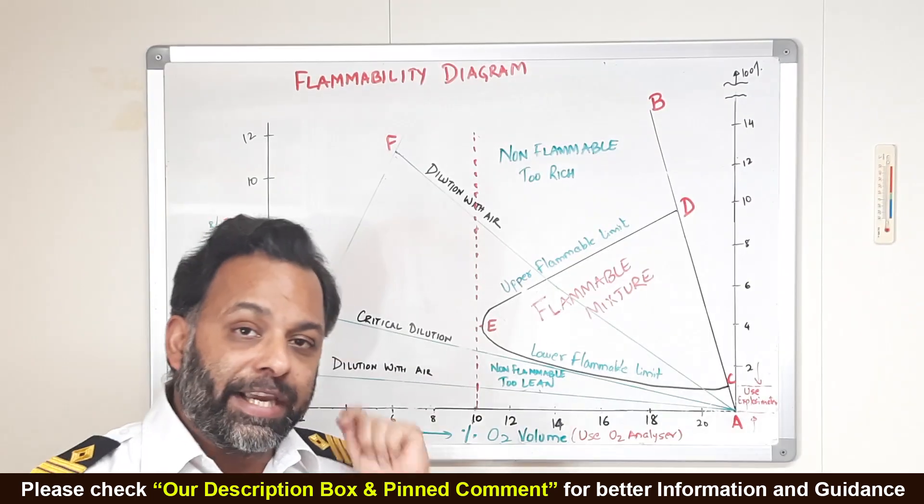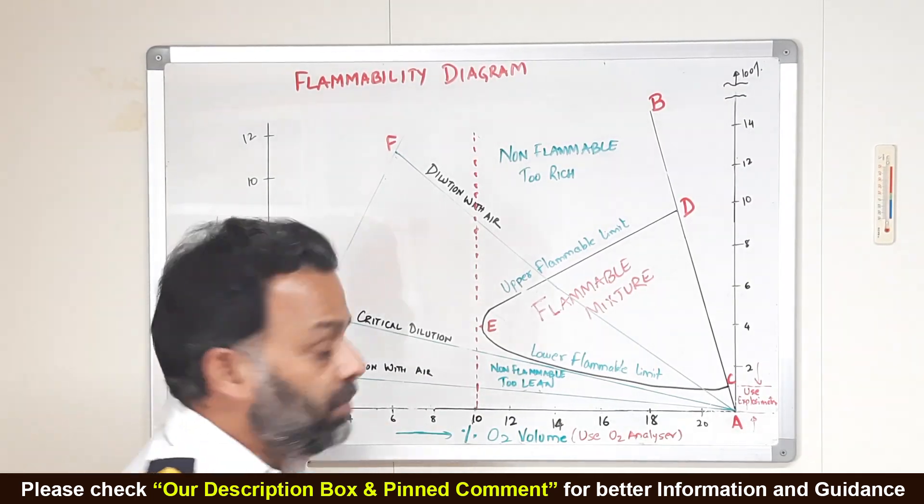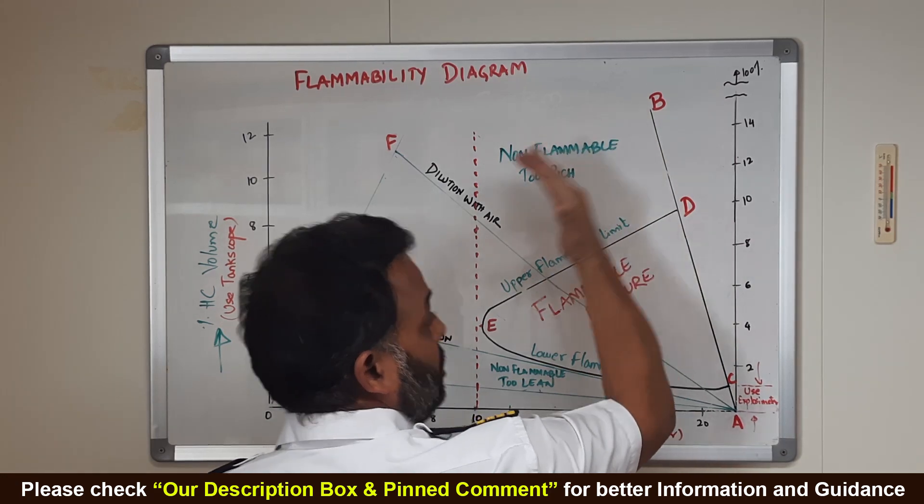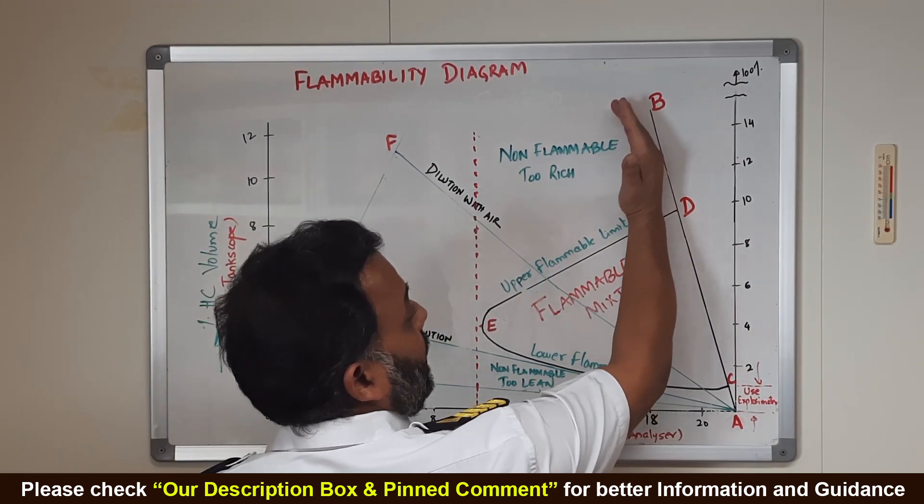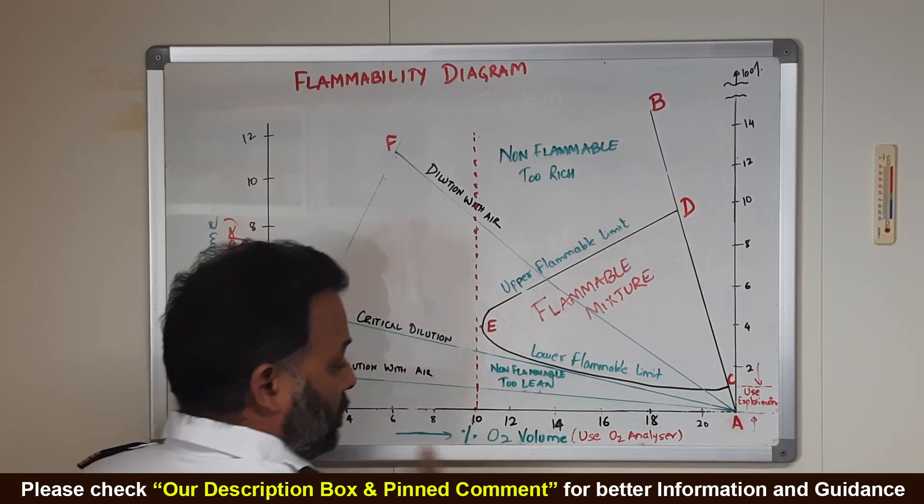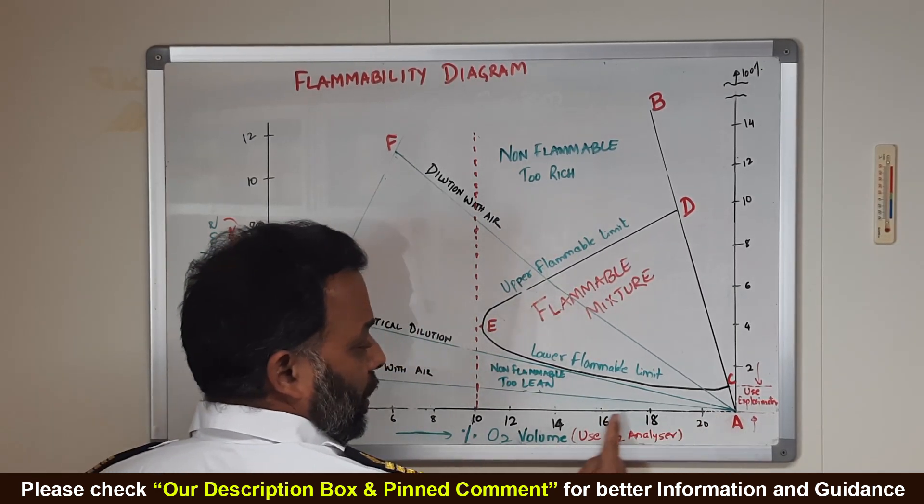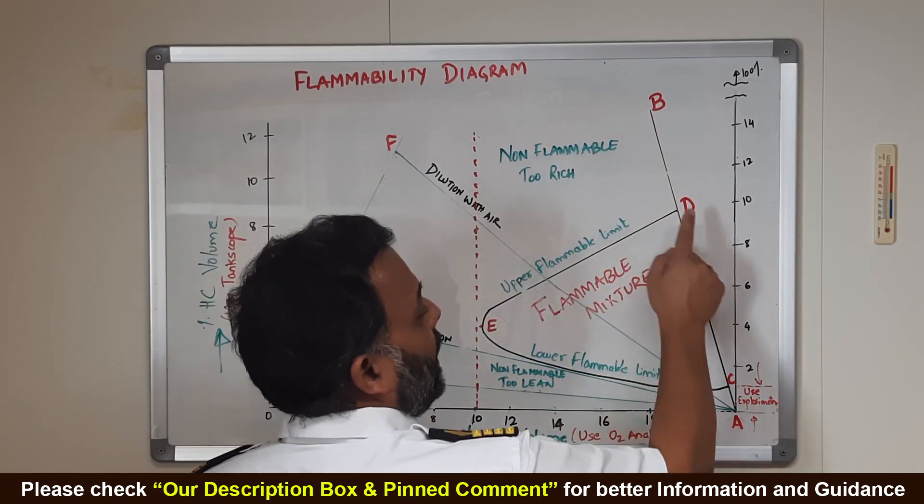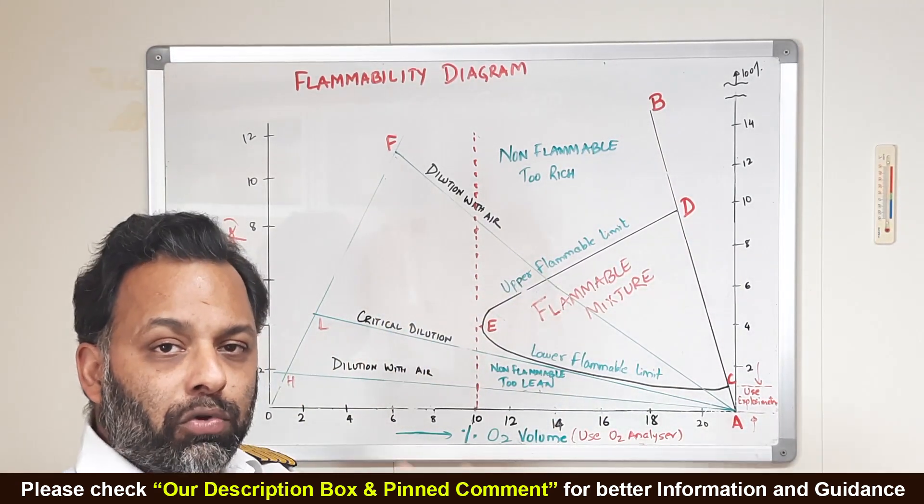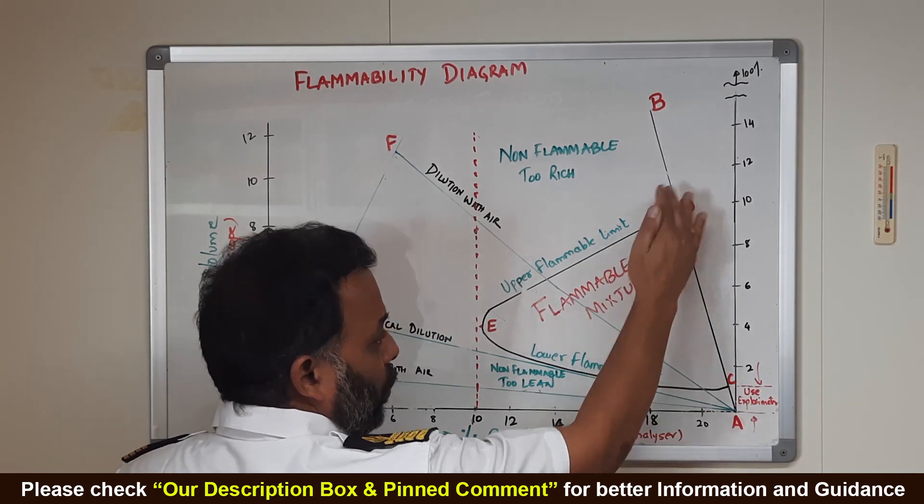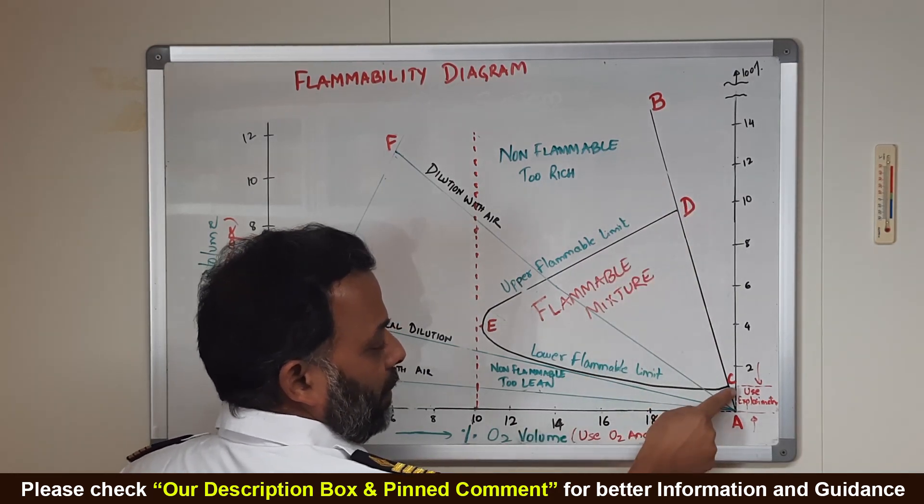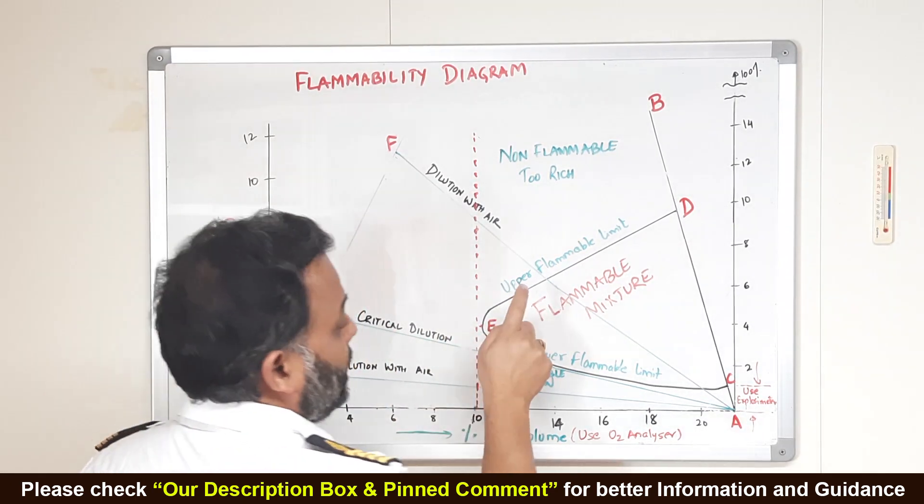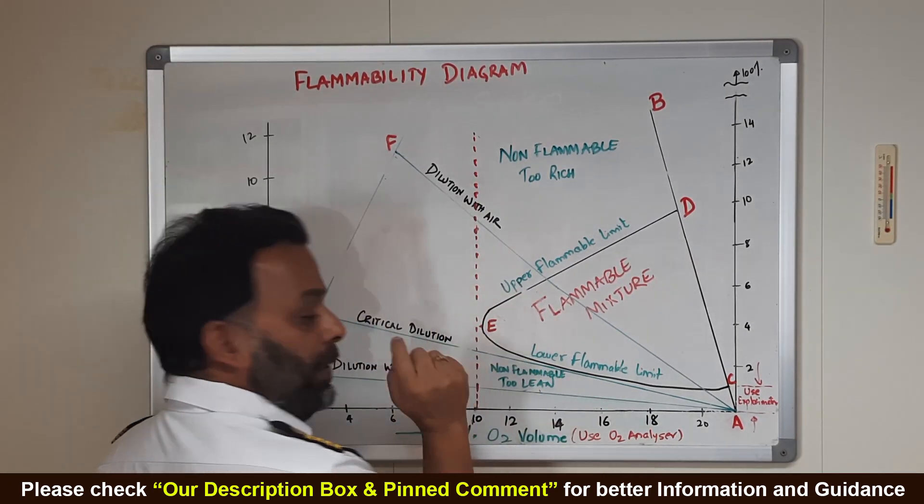Now, as we introduce IG, inert gas into the system, this line will start to move on the left side. As we introduce more inert gas into the system, this oxygen will start going down. As we introduce more inert gas, this upper flammable limit will go down and this lower flammable limit will come up. And there will come a point, point E, where the UFL and the LFL will meet.